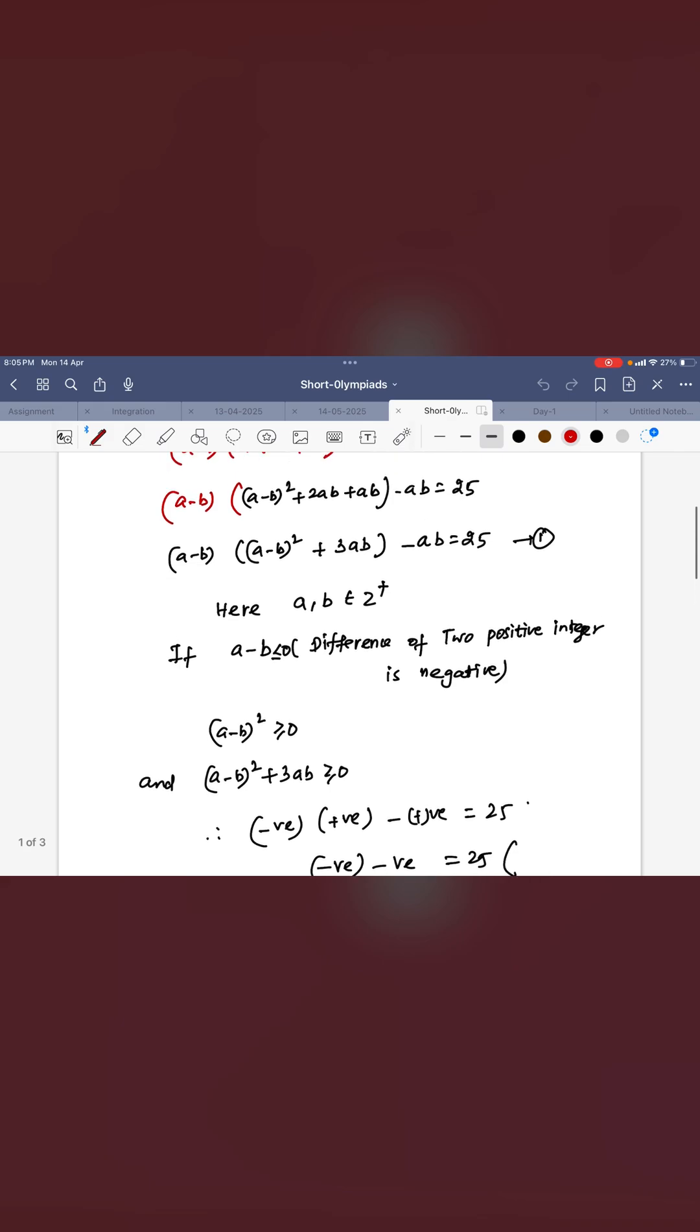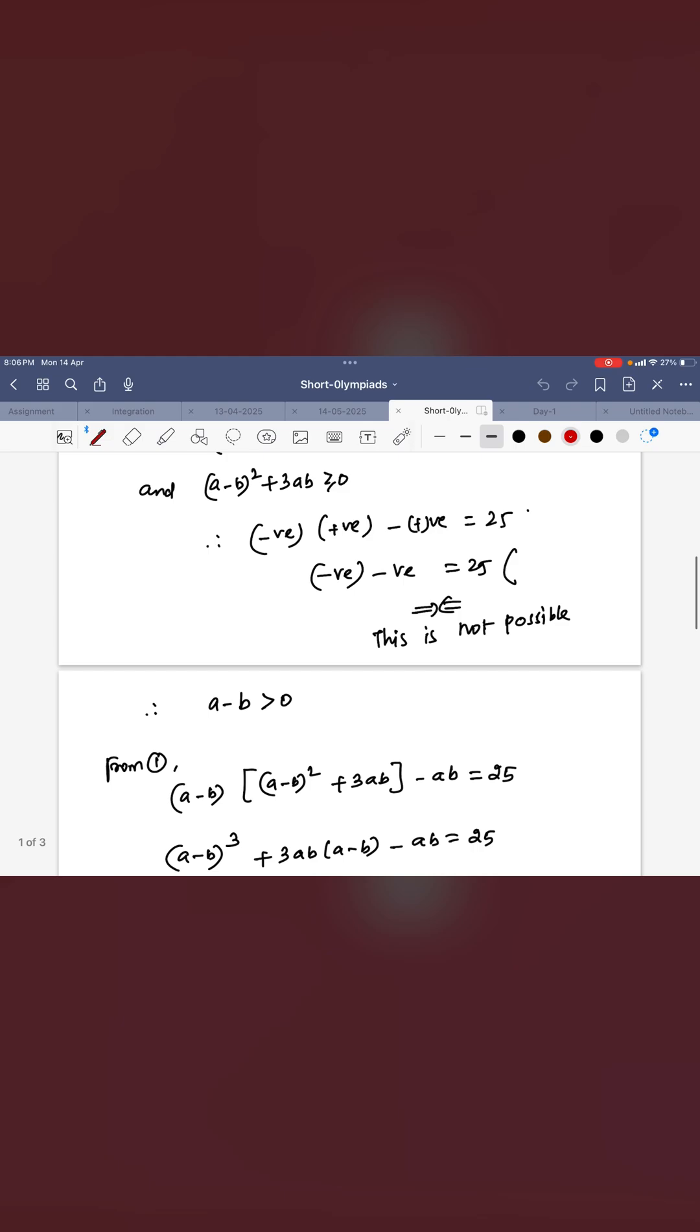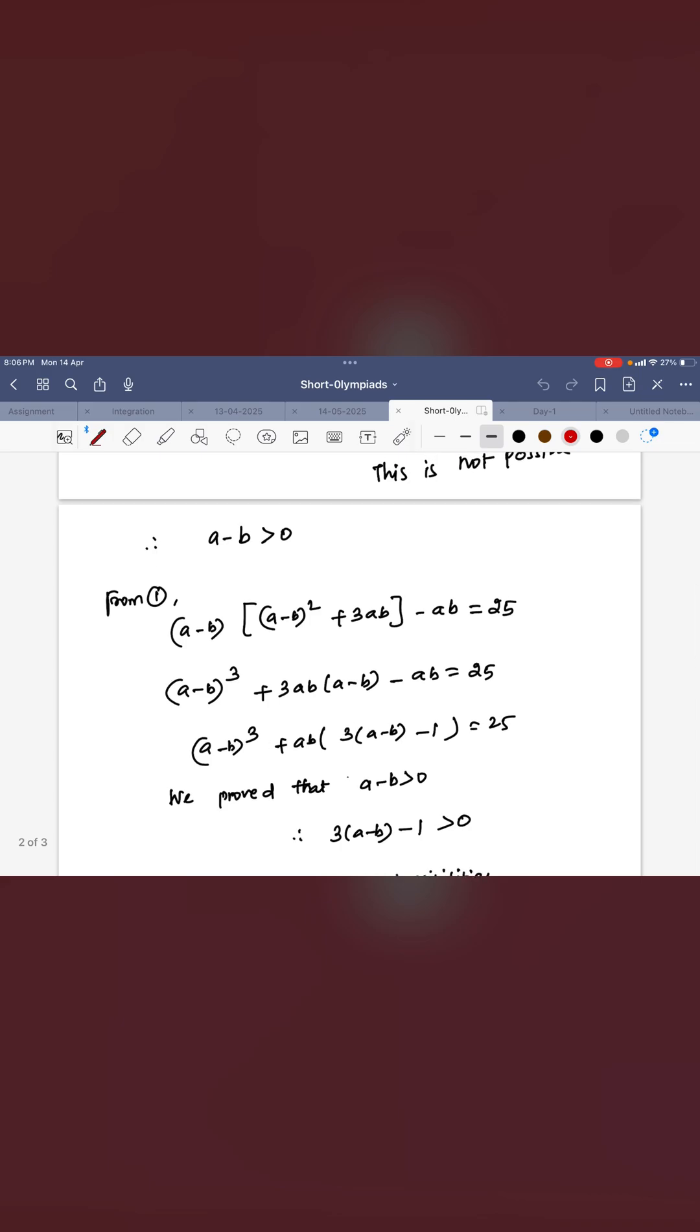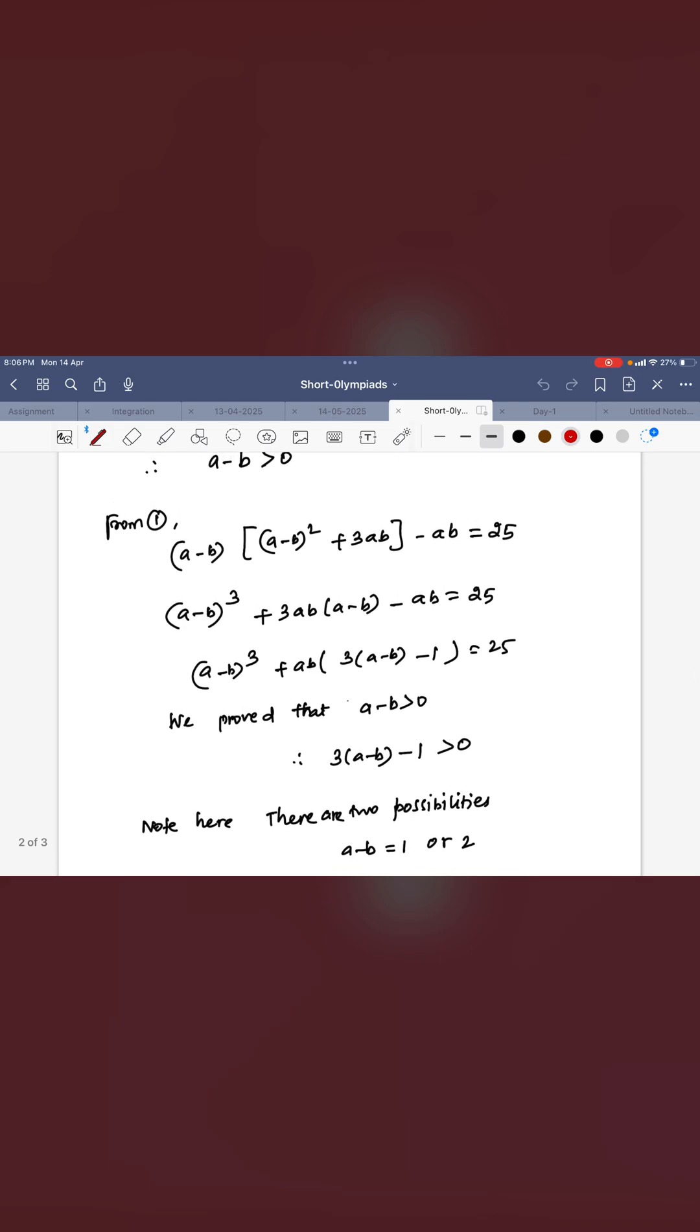Therefore A - B should not be negative. A - B is greater than 0. That means any two positive integers you take, the difference is always greater than 0 in this case. Now you can simplify this and get (A - B)³ + AB(3(A - B) - 1) = 25.